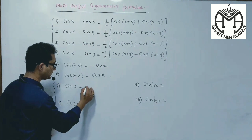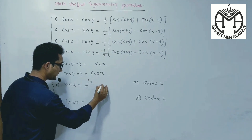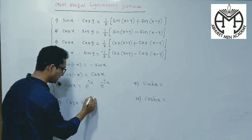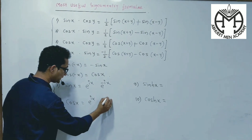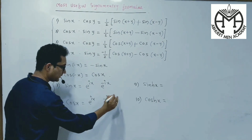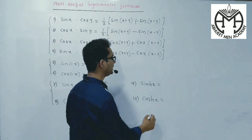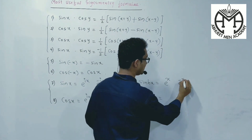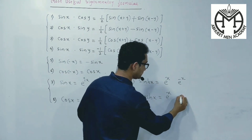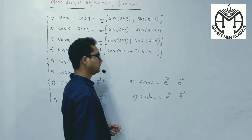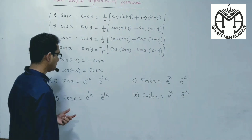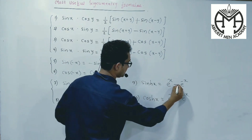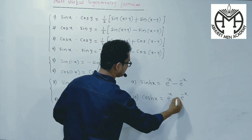Now, many times in terms of Euler's formulas, here is also e raised to ix, e raised to minus ix, and the hyperbolic class. In this it should be e raised to x, e raised to minus x, e raised to x, e raised to minus x. We know that sine is an odd function, so it takes a minus sign, and cosine is an even function, so it takes a plus sign.